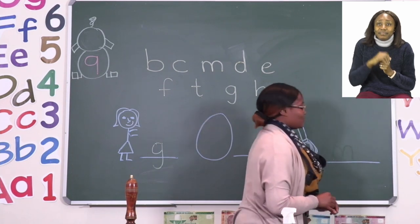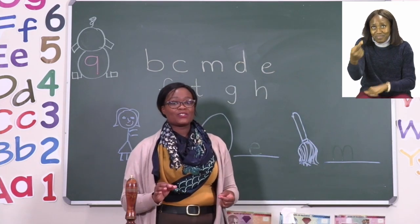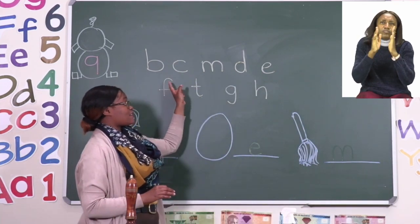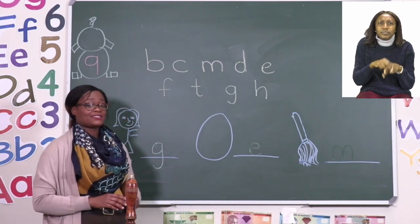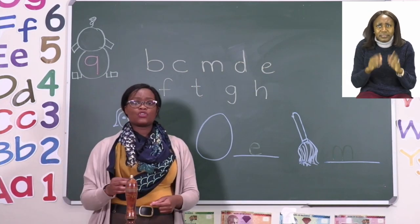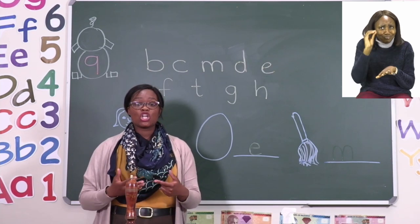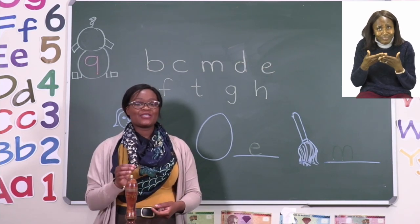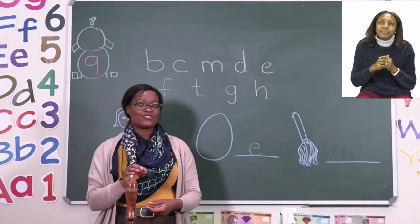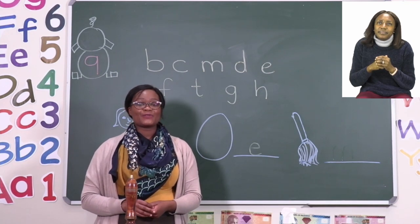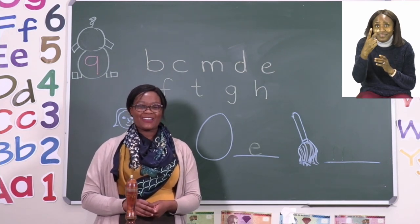The rest of the exercise you are going to do by yourself. Make sure that you use the letters that we have been given for the beginning sound. Take your time and if you are not sure, say the word slowly so that you can hear the beginning sound and then choose the correct letter. I will see you when you are done after the advert break.